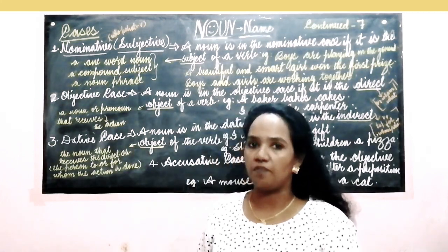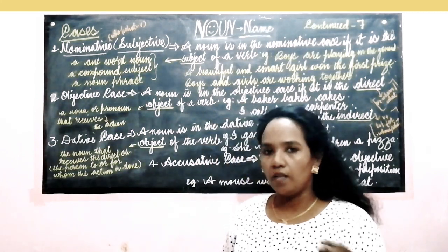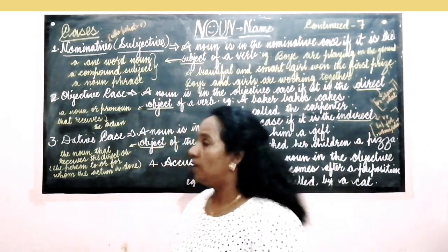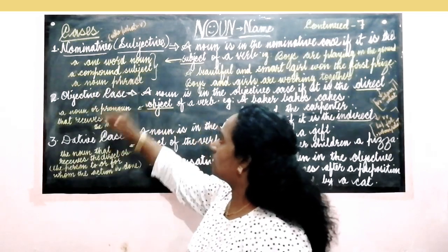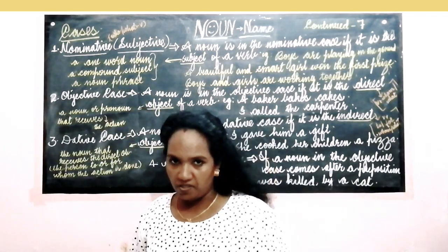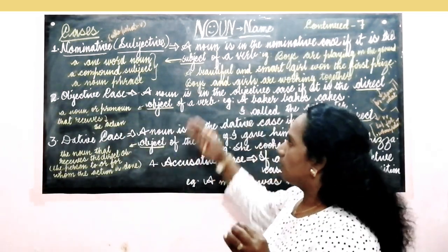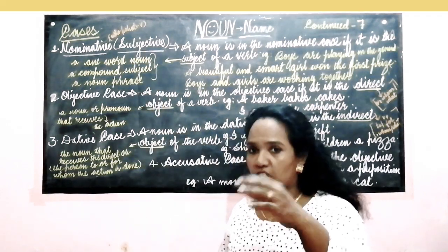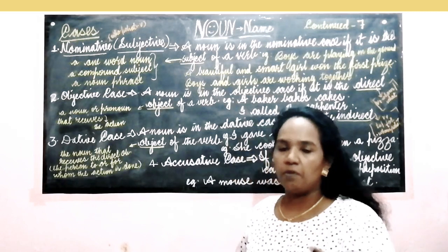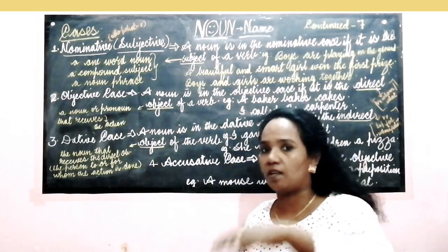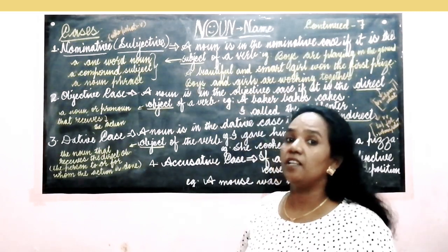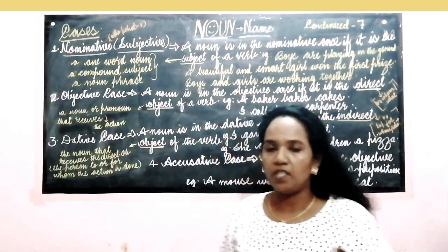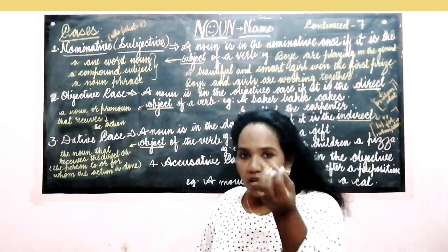Nominative means a subjective case or the naming. A name can be a noun or it can also be a pronoun. A noun can be a single word noun, a common subject, or a noun phrase. The question is how can one understand the nominative or subjective case in a sentence. We have already discussed about the subject and the predicate. The subject is identified by asking the question who or what with the verb, and then we can clearly understand which is the subject.